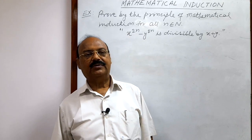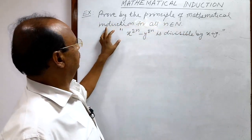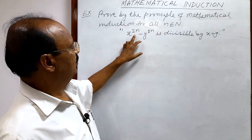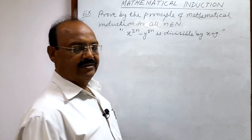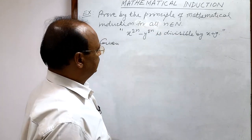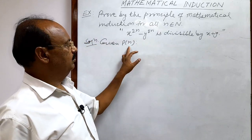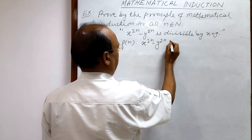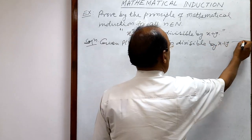Here we will see a very interesting and important question from the chapter mathematical induction. The question is: prove by the principle of mathematical induction for all n belonging to the set of natural numbers. The mathematical statement P(n) is: x to the power 2n minus y to the power 2n is divisible by x plus y. Let us call it relation number 1.